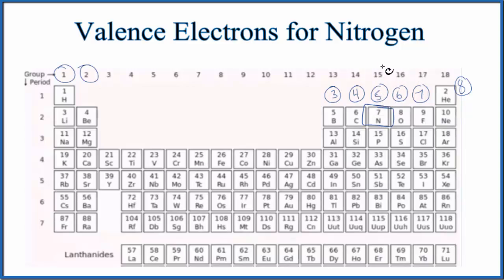The other way we can determine the number of valence electrons for nitrogen is to write the electron configuration. Nitrogen has an atomic number of seven. That means it has seven protons, and since all these elements are neutral, it also has seven electrons.